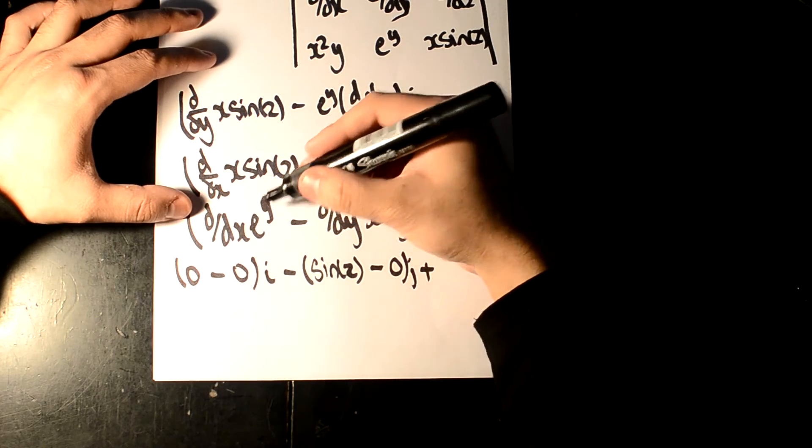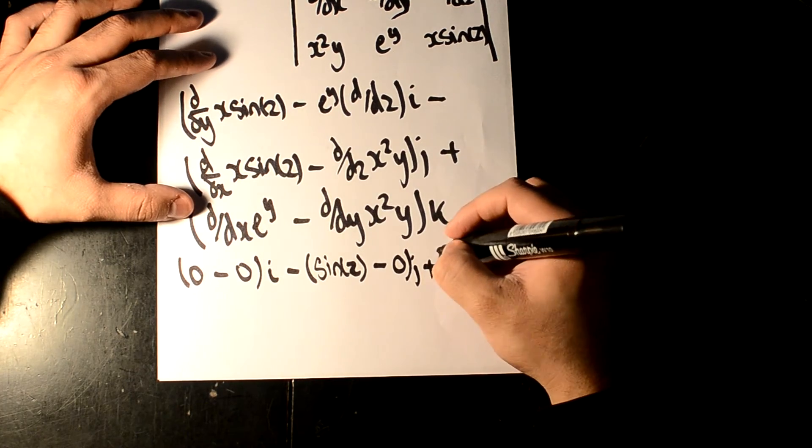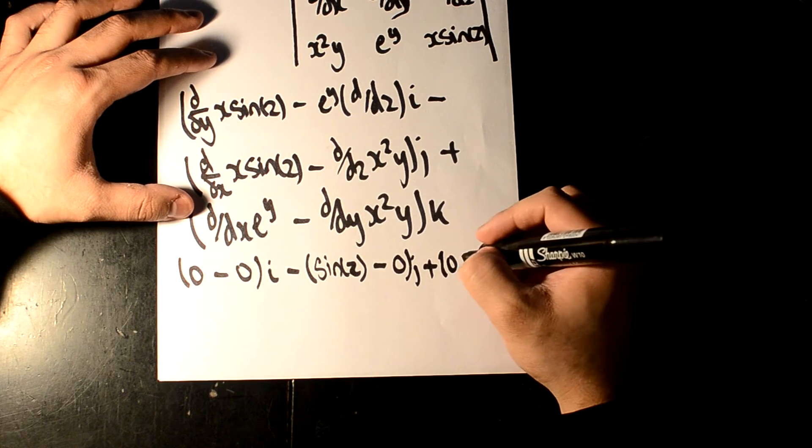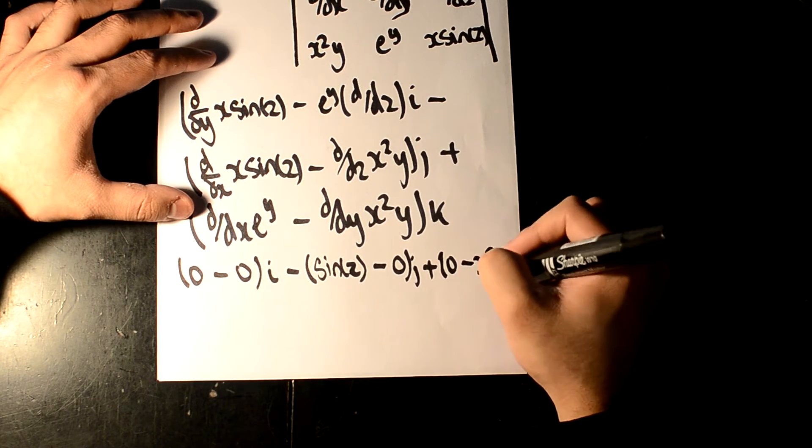Here, we get d dx, e to the y. And as you can see, that would be nothing. d dy would be x squared. Sorry. Okay.